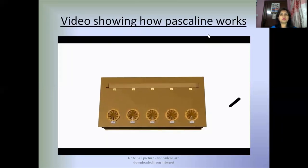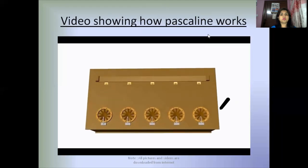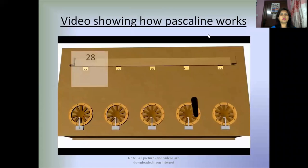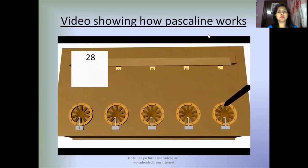The Pascaline is a series of input dials and output windows. Each input dial was divided into 10 parts by a set of spokes. A digit is entered into the machine by placing a stylus between the appropriate spokes and rotating the wheel clockwise until a metal stop is reached. Entering several numbers consecutively causes their sum to be displayed in the output windows.